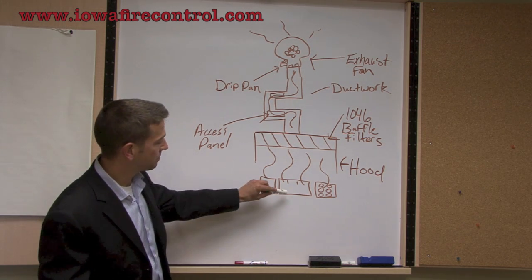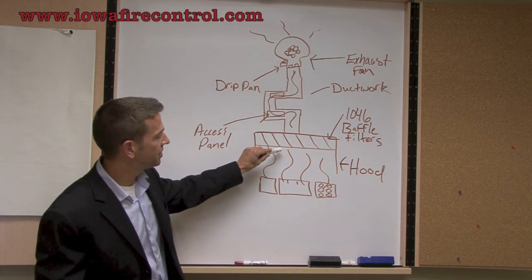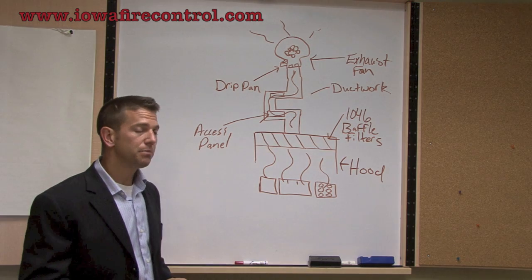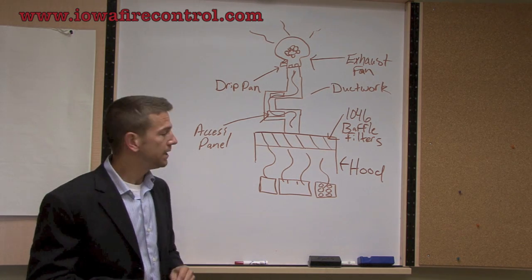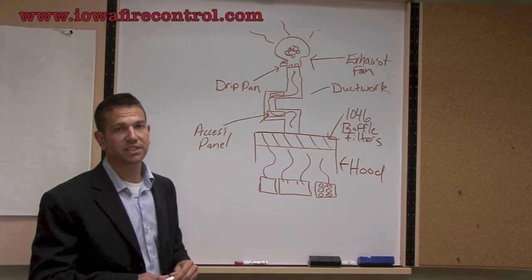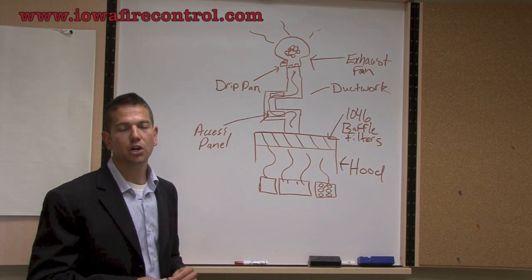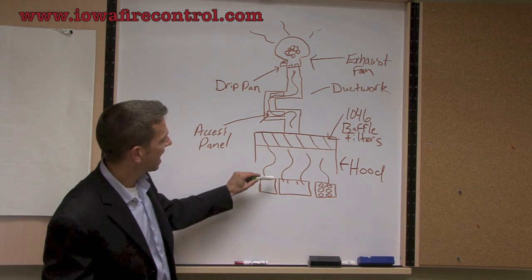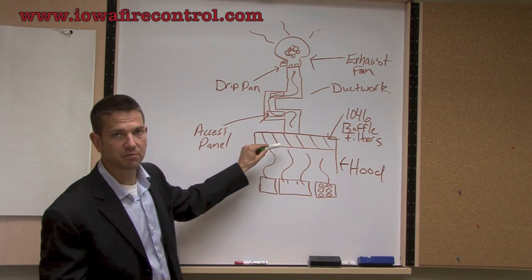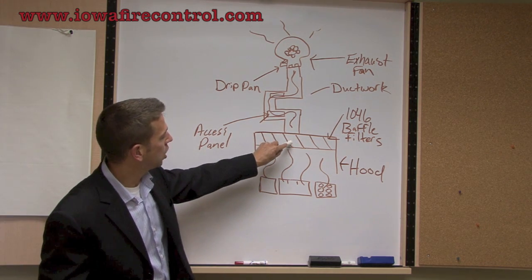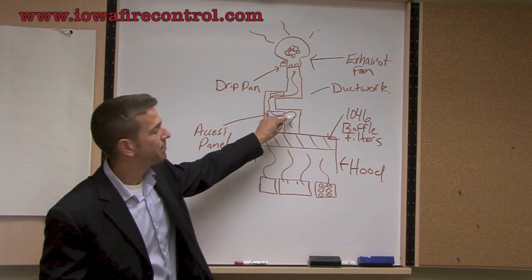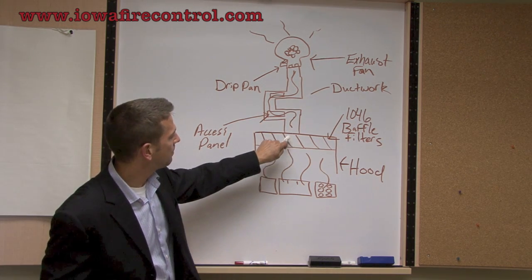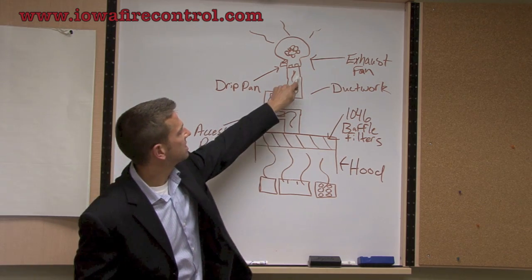So what you have is these appliances creating effluent, and that effluent comes up into the canopy hood. There are many different styles of hoods, but the most obvious style is going to be a wall-mounted canopy or an island canopy hood. Many places have multiple hoods, and then the effluent goes into the ductwork, and that fan is going to pull that effluent, that hot air and grease, up and through that system.